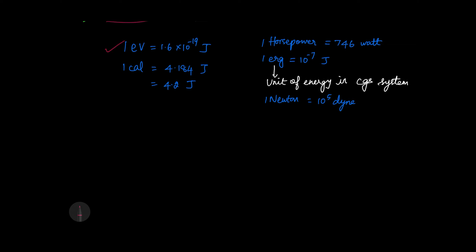Important conversions: 1 electron volt equals 1.6 × 10 power minus 19 joules. 1 calorie equals 4.184 joules — easy calculation uses 4.2 joules. 1 horsepower equals 746 watts. 1 erg is the unit of energy in the CGS system.